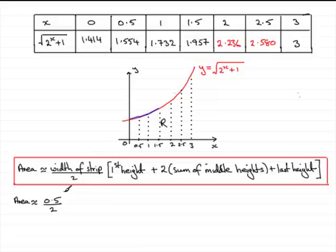Then it says the first height, and by the first height we mean this height here. The height when x is 0, which is this value 1.414.